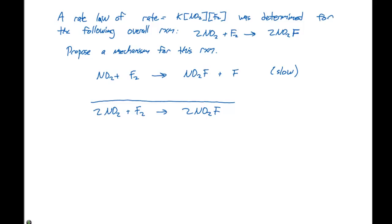Next, we know that we have to get rid of this fluorine atom. It's going to be an intermediate because it does not show up in the overall balanced equation. We need another NO2 as a reactant, which will give rise to NO2F and help complete our overall balanced equation.